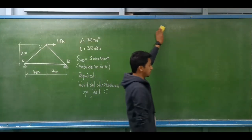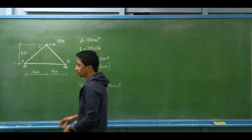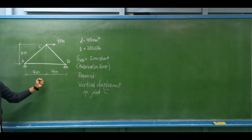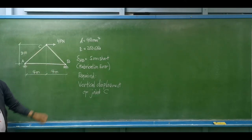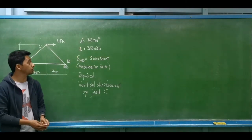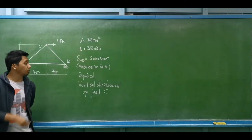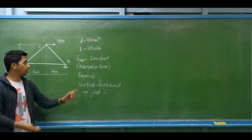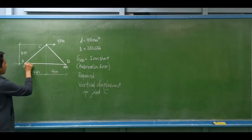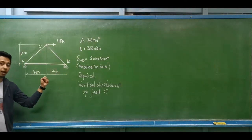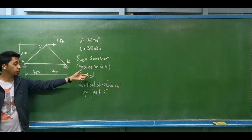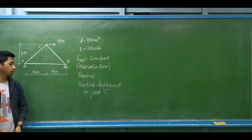Let's have a simple truss as an example for virtual work — this time virtual work plus fabrication error. From this given truss, it is loaded with 4 kN at joint C to the right. The cross-sectional area of all members is 400 square millimeters and the modulus of elasticity of all members is 200 GPa. Member AB is 5 millimeters short, caused by fabrication error.